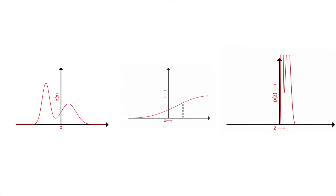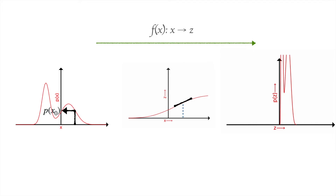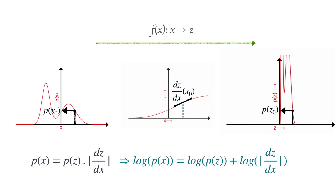If you have a variable X with an unknown probability distribution and you transform it using a function F to Z, then the relationship between P(X) and P(Z) is given by this expression, which can also be written as: log P(X) = log P(Z) + log of the absolute value of dz/dx.